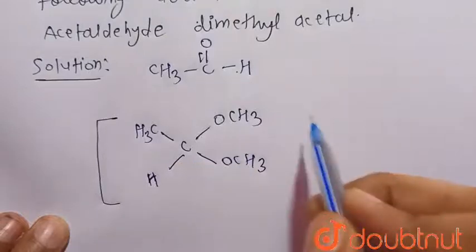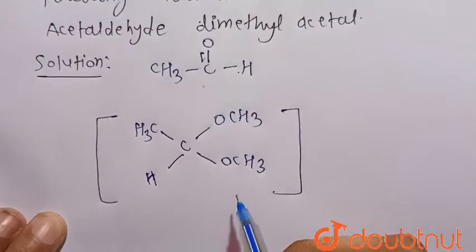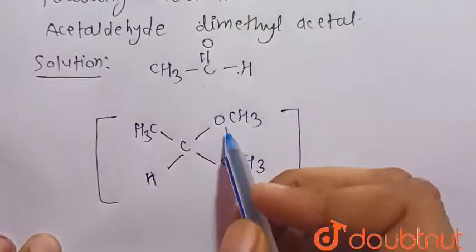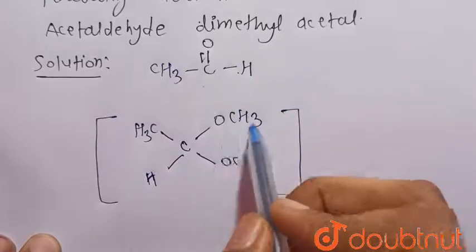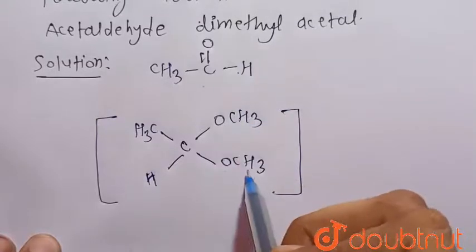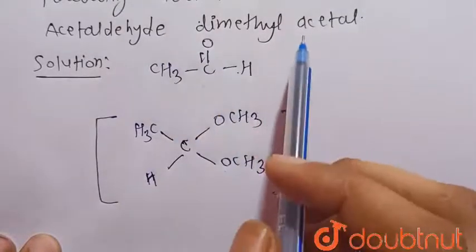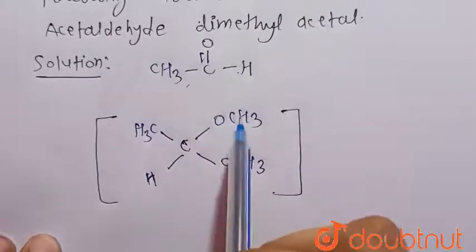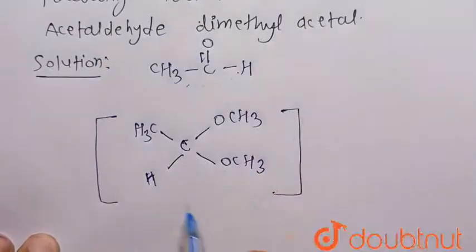And this is the required derivative, acetaldehyde dimethyl acetal. Acetal is called when two OR groups are attached to the same carbon. That is here OR, that is OCH3, OCH3 attached to the same carbon. That's why this is the acetal. And it is the derivative of the acetaldehyde that is attached with the acetaldehyde. So that's why it is called the acetaldehyde dimethyl acetal.